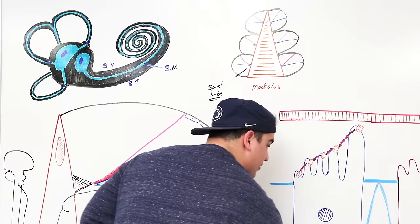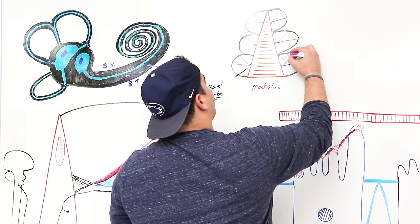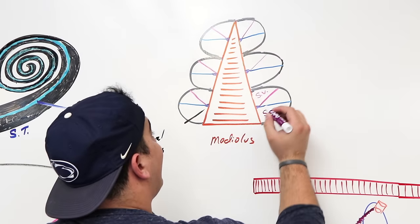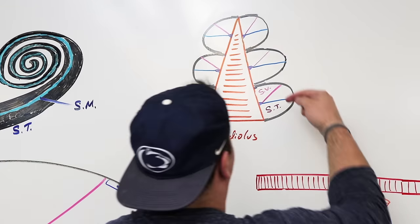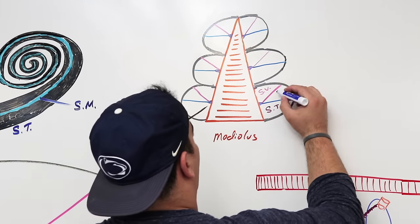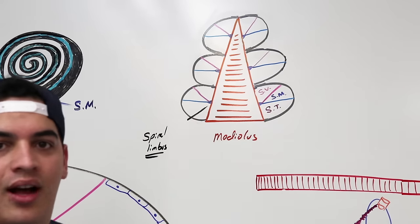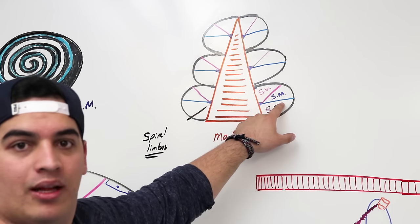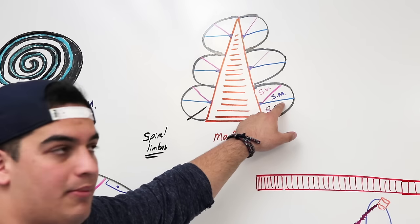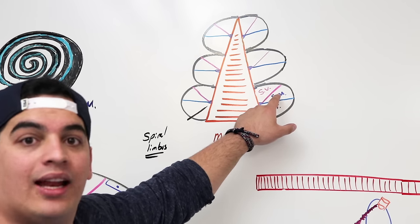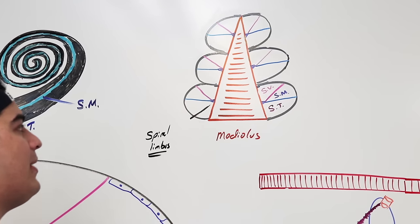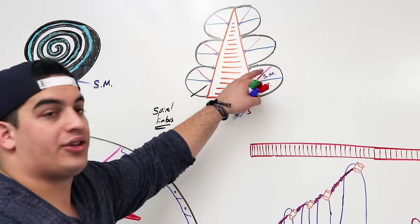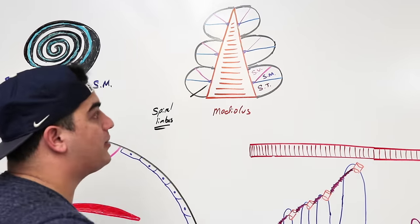The top chamber, above the pink layer, is the scala vestibuli. Below the blue layer is the scala tympani. In between the blue and pink layers is the scala media, or cochlear duct. The scala vestibuli and scala tympani contain perilymph — high in sodium, low in potassium. The scala media contains endolymph — rich in potassium, low in sodium, maintained by the stria vascularis. Now we'll zoom in on one cochlear turn to examine its structures in detail.